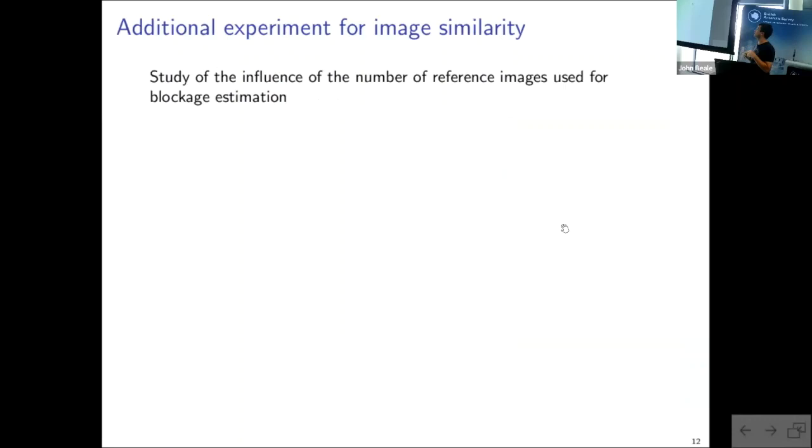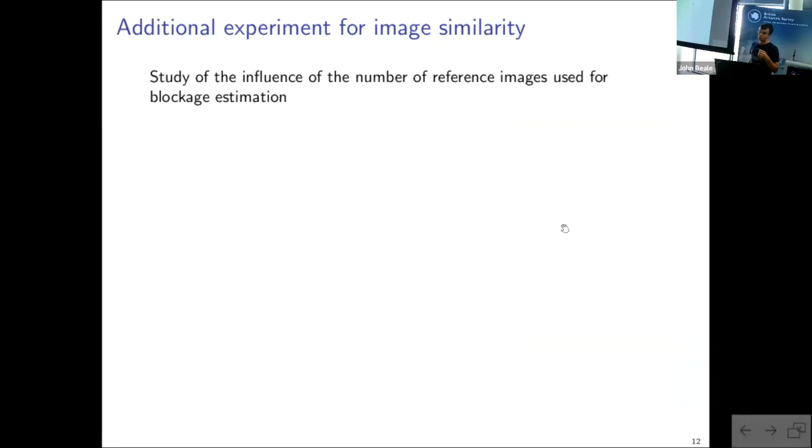So I also performed an additional experiment to try to analyze the influence of the number of reference images on the accuracy of the Siamese network, so the image similarity approach, and what I noticed, as you can see here, is that once we have labeled 10 images per camera, the method doesn't really improve after that, so it means, basically, I think that the borderline cases that I presented you in the previous slides remain wrongly detected, so the method can't improve after this given value.